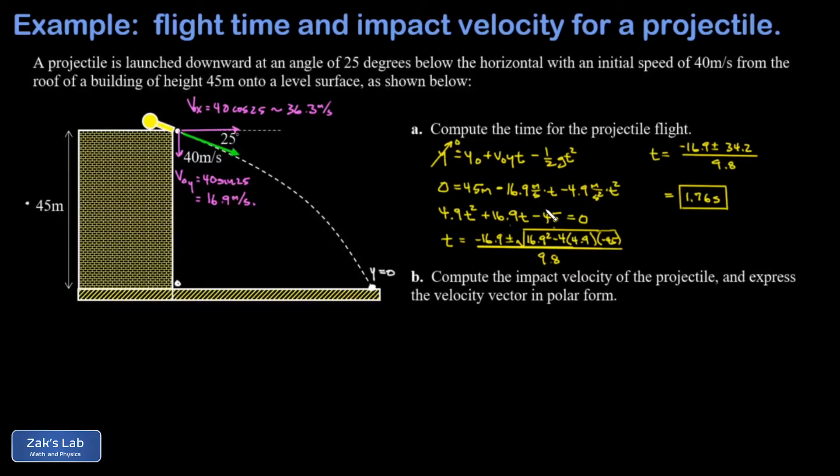In part b we want the impact velocity of the projectile, so that means the final velocity when it hits the ground. I want to express that in polar form, so our final velocity vector looks something like this and that carries a downward component together with a rightward component.